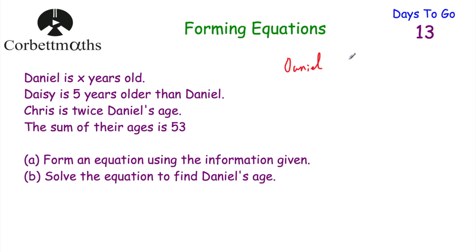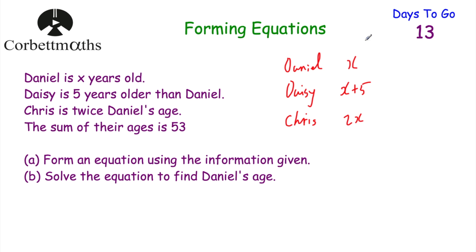Daniel is X years old. Daisy is five years older than Daniel, so she's X plus 5. Chris is twice Daniel's age, so we multiply by two — that's 2X. Adding up the algebraic expressions: X plus X plus 2X is 4X, and we still have plus 5, so the sum of their ages is 4X plus 5. We know the actual sum is 53, so our equation is 4X plus 5 equals 53. If you got that for part A, well done.